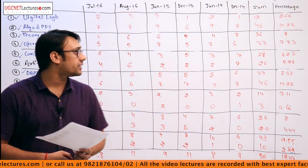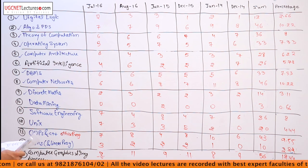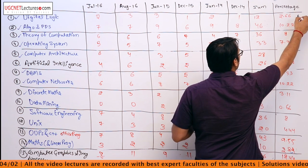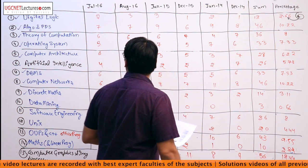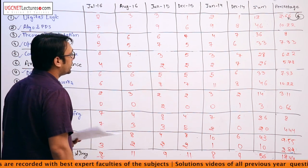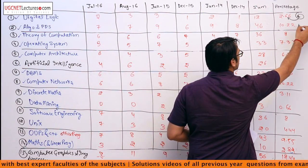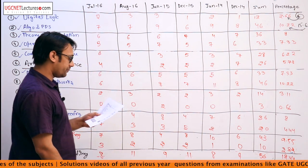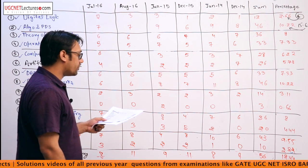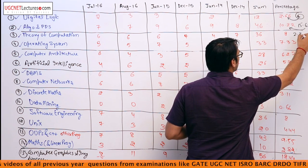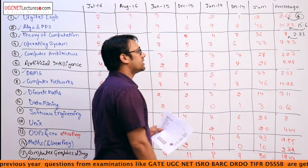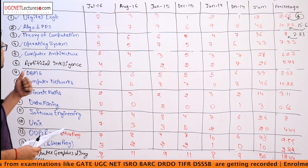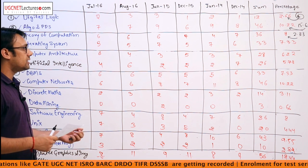In Paper 2 of UGC NET Examination, the digital logic subject was 6%. Here in Paper 2 it was 6%, now it has changed to 2.6%. Then we have algorithms and algorithm programming data structures — it was 15.66%, now changed to 10.22%. Then we have theory of computation, which changed from 2.33% to 8%. That means the number of questions from theory of computation is more in Paper 3, and the number of questions from algorithm programming data structures is less in Paper 3.